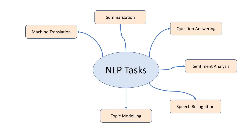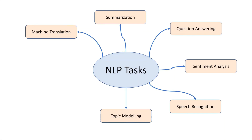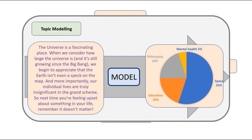One of the most traditional NLP tasks involves topic modelling. This can involve techniques such as Latent Dirichlet Allocation. The task itself requires identifying the main topics present in a document and the degree of presence of each topic.